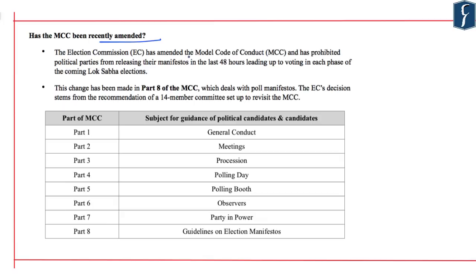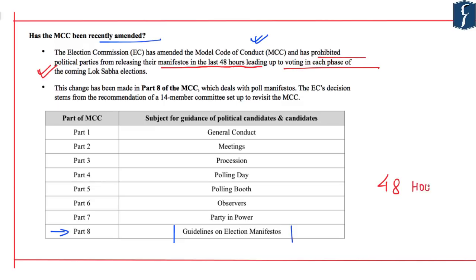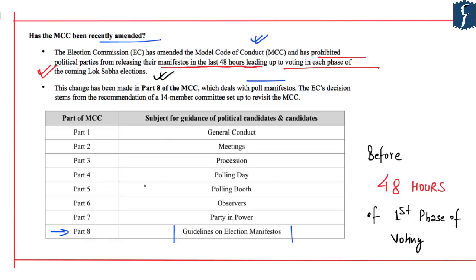Has the Model Code of Conduct been recently amended? Yes. The Election Commission has recently amended the MCC, prohibiting political parties from releasing their manifesto in the last 48 hours leading up to voting in each phase of Lok Sabha or Vidhan Sabha elections. Any political party releasing an election manifesto must do so before 48 hours of the first phase of polling. This change has been made in Part 8 of the Model Code of Conduct, which deals with poll manifestos.